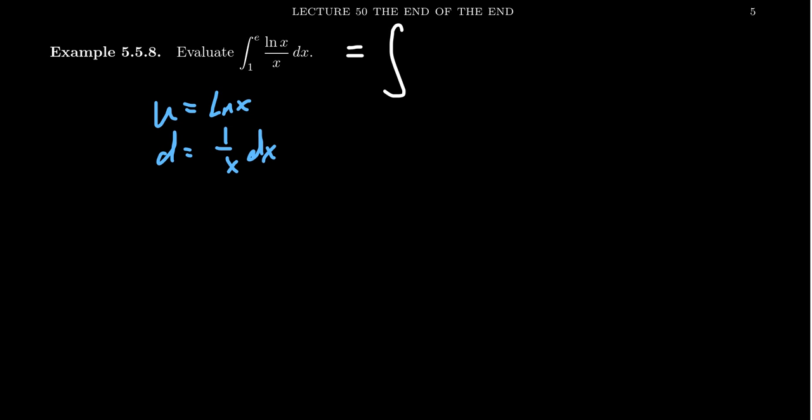We can take the integral. The natural log becomes u, and the dx over x becomes du. We're almost there, except there are these bounds. How do the limits change? If x equals e or x equals 1, when x equals e, you get u equals the natural log of e, which is 1. If x equals 1, then u equals the natural log of 1, which is 0. So for our function, our lower bound will be u equals 0, and the upper bound will be u equals 1.